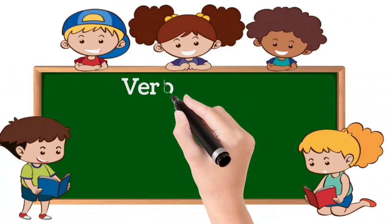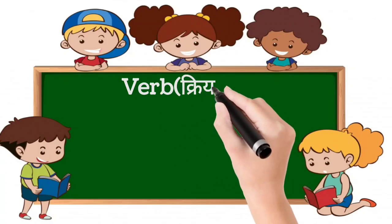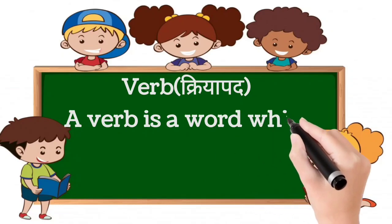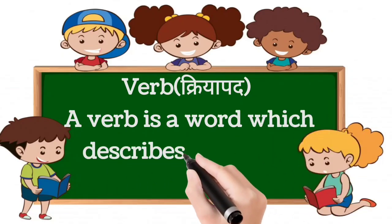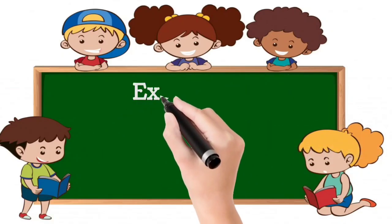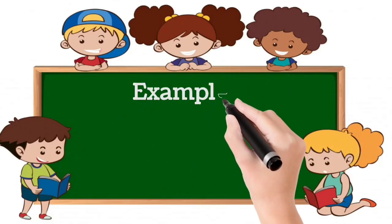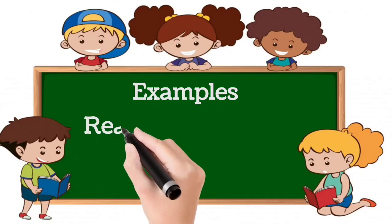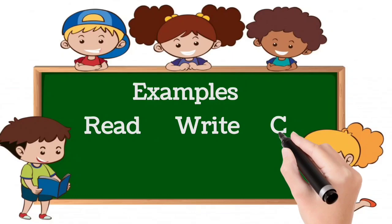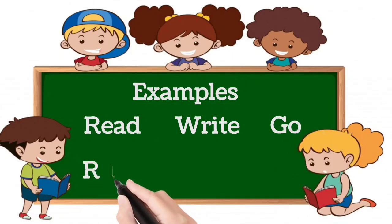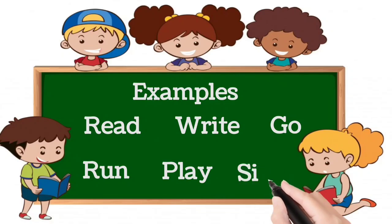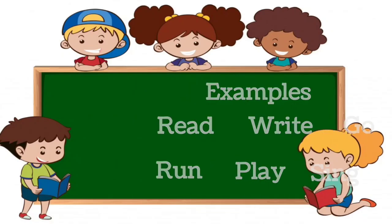The third part of speech is verb — 'kriyapad.' It is also called an action word. A verb is a word which describes an action. Examples are: read, write, go, run, play, sing, etc.